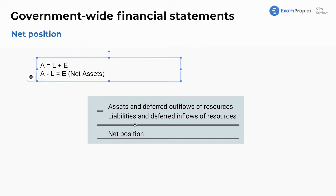In government-wide financial statements, governments are encouraged to report net position as the difference between assets plus deferred outflows of resources, and liabilities plus deferred inflows of resources. These are accrual-based concepts — deferred inflows and outflows are accrual basis.